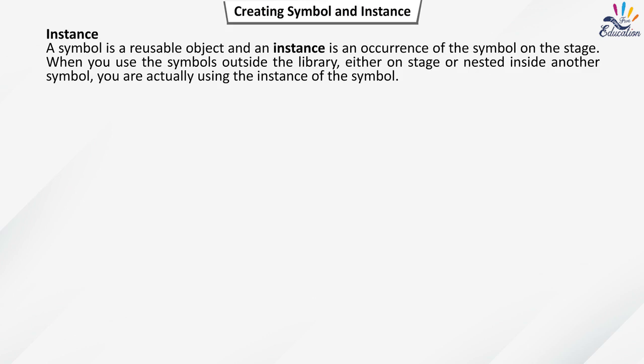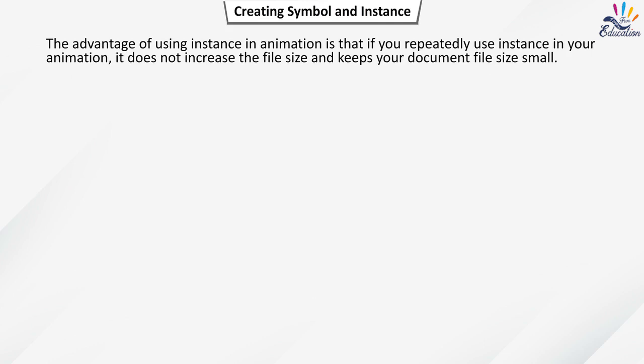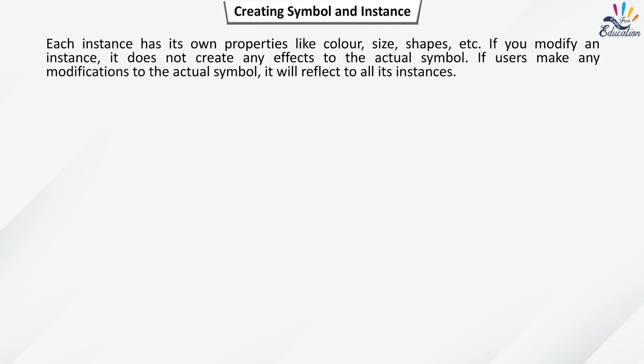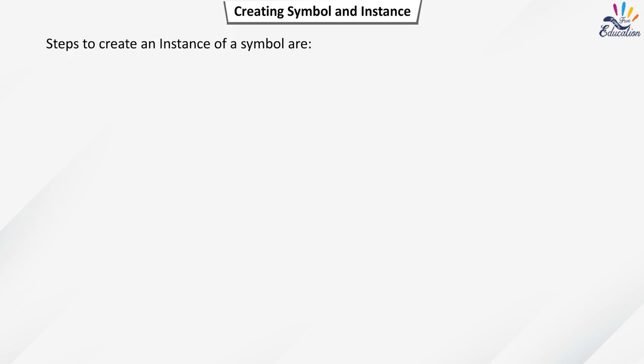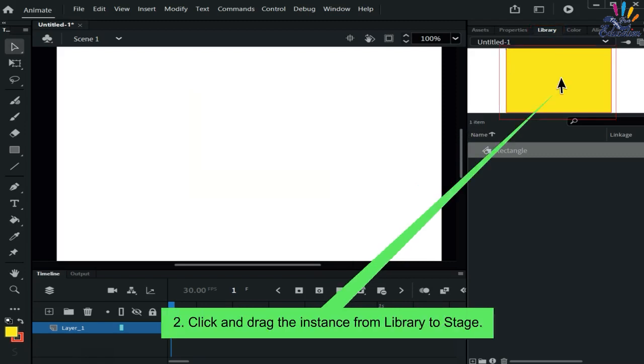A symbol is a reusable object and an instance is an occurrence of the symbol on the stage. When you use symbols outside the library — either on stage or nested inside another symbol — you are using an instance of that symbol. Using instances does not increase the file size, keeping your document small. Each instance has its own properties like color, size, and shape. Modifying an instance does not affect the actual symbol, but modifying the symbol reflects changes to all its instances.